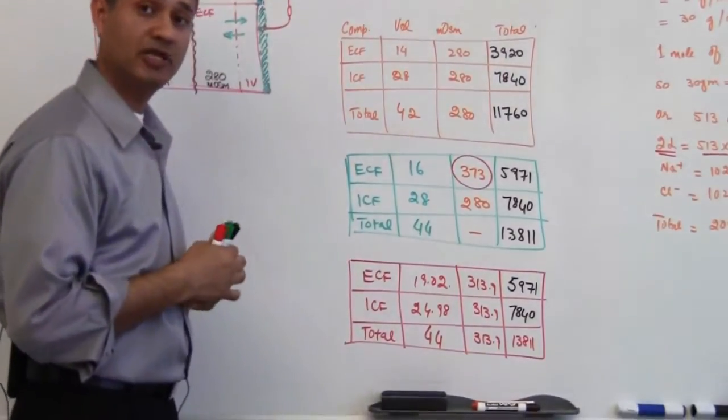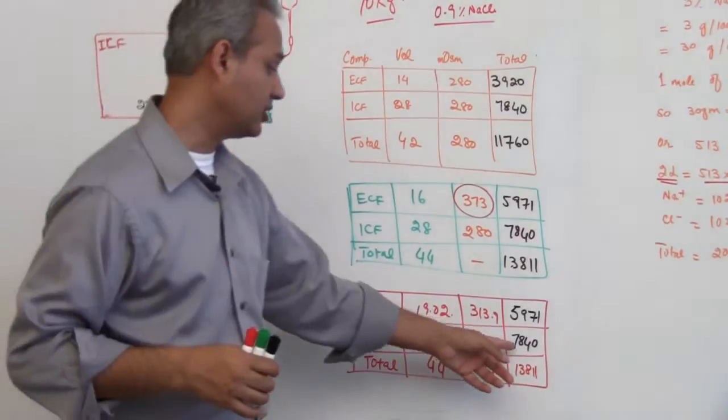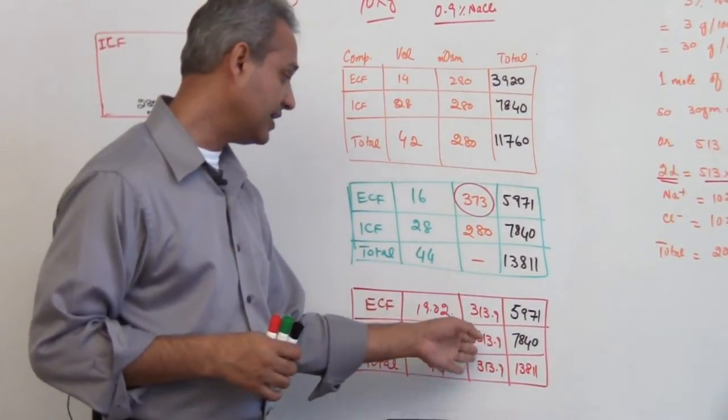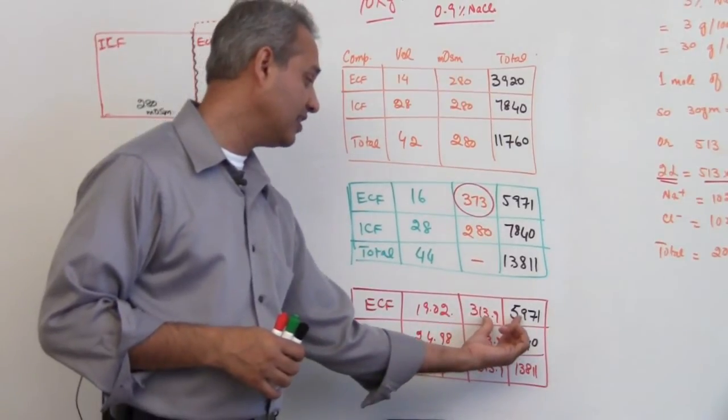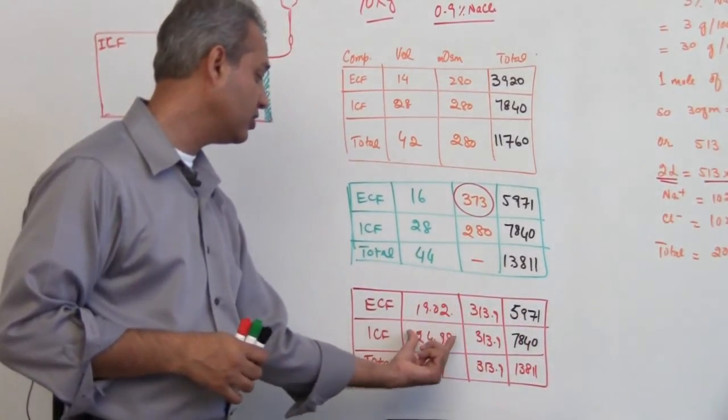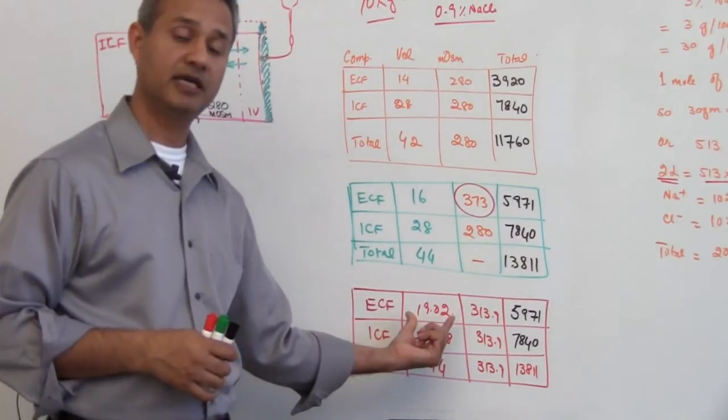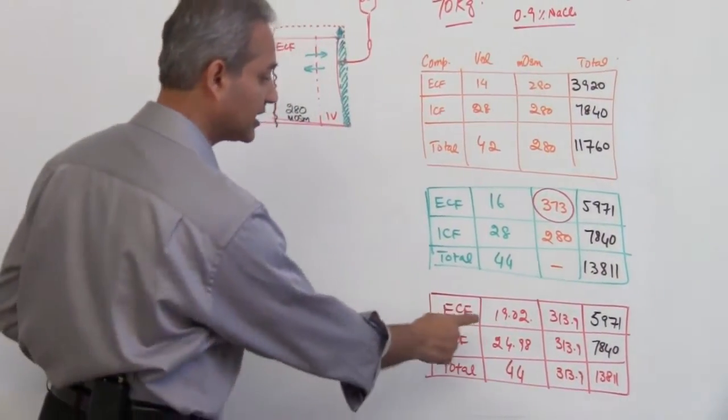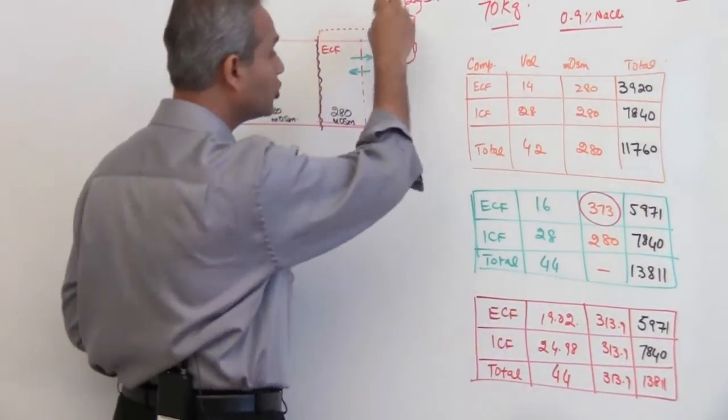Similarly, the total milliosmoles present in the ICF are going to be constant too, but the osmolarity has changed. So you put the osmolarity here and then you divide these two and that would tell you the amount of fluid in these two compartments.